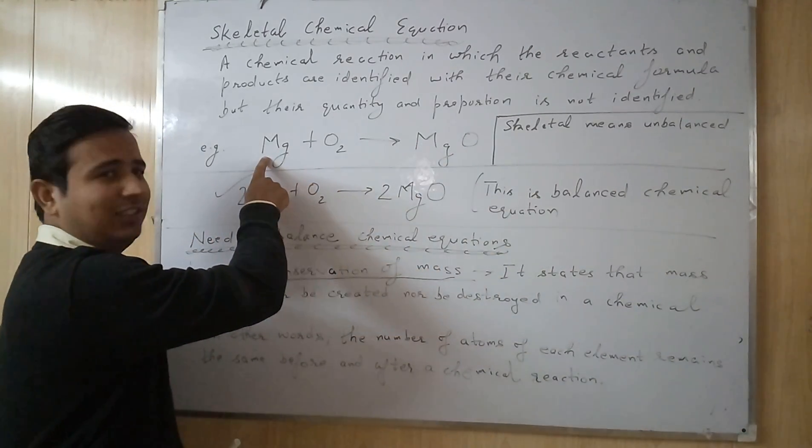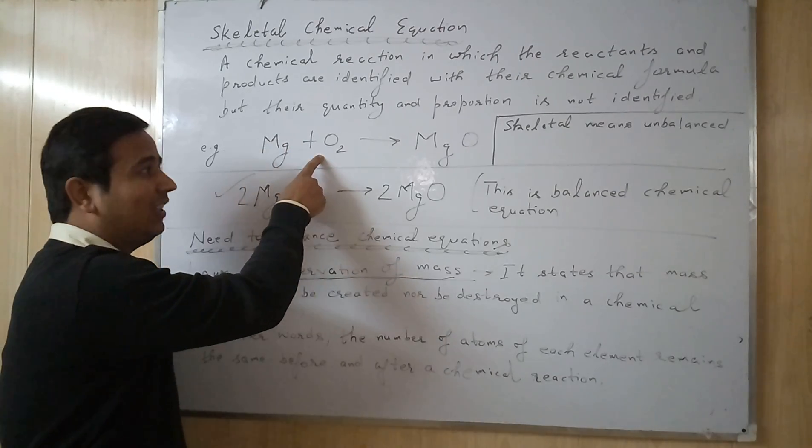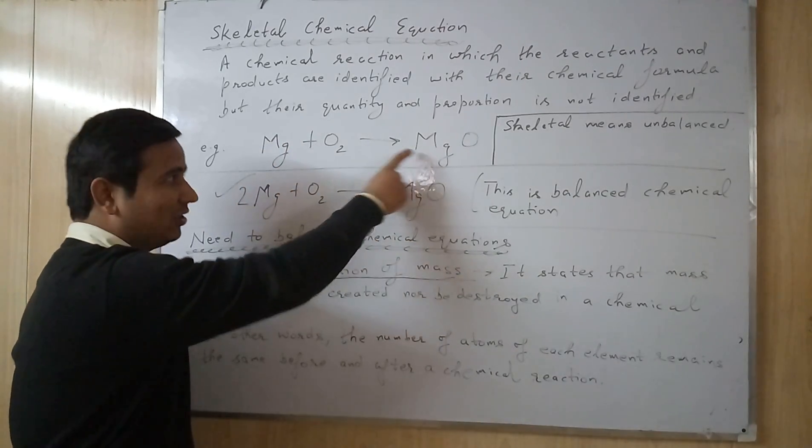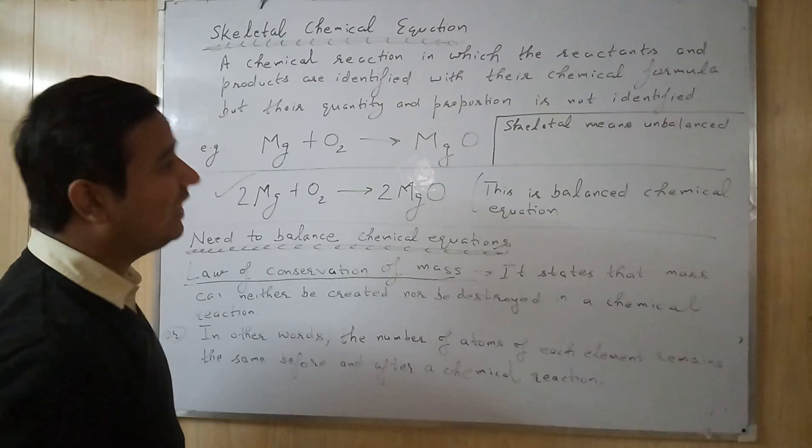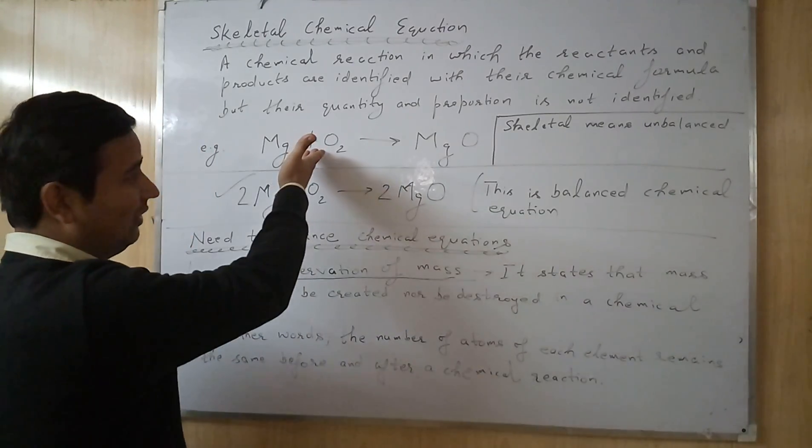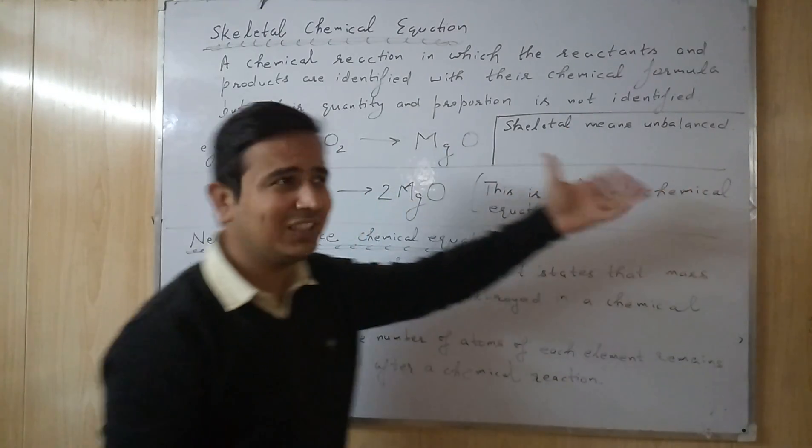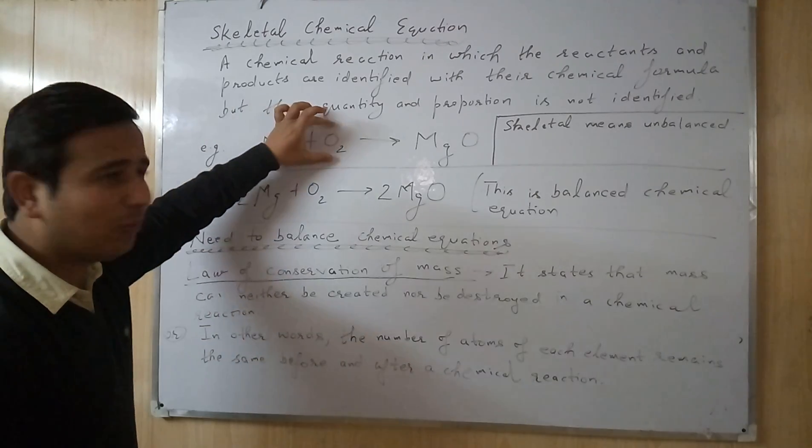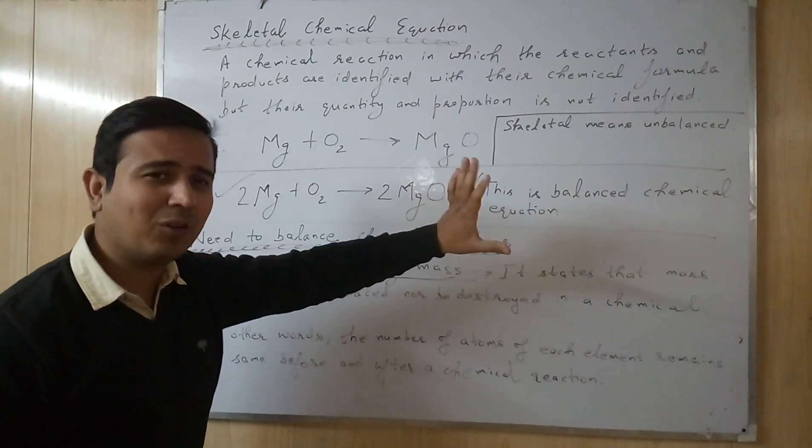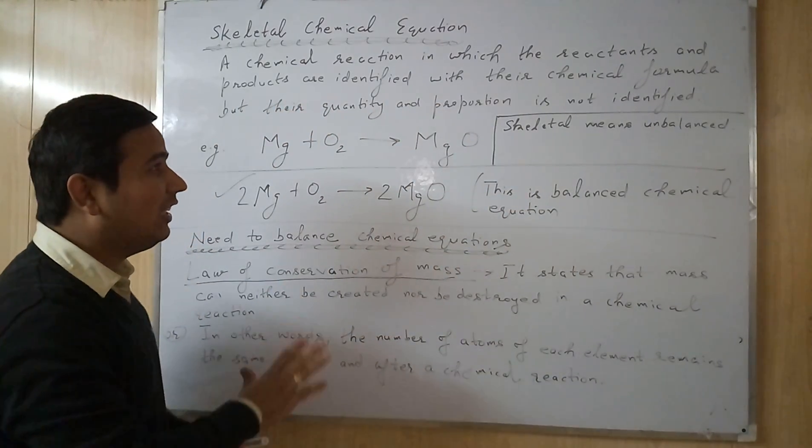I have written an example for you. The preparation of Magnesium Oxide: the reactants are Magnesium and Dioxygen and the product is Magnesium Oxide. So this is a Skeletal Chemical Equation. Obviously Skeletal means unbalanced. Now you are clear with the chemical formula of reactants, you are clear with the chemical formula of products, but you are not clear with the proportion.